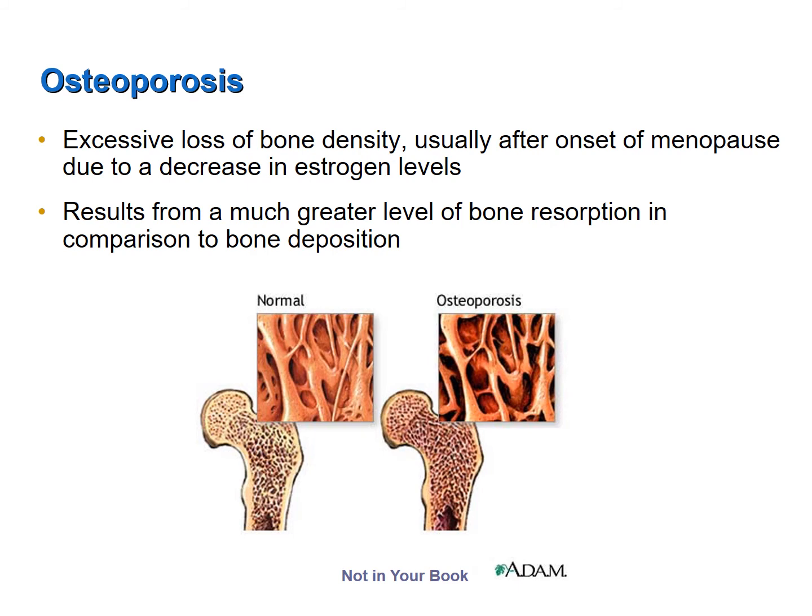The demographic most at risk for osteoporosis in the United States is Caucasian women. To decrease your risk of osteoporosis, it is very important that prior to menopause one gets adequate amounts of calcium and vitamin D, maintains a very active lifestyle — the more exercise and stress you put on your bones, the more bone deposition occurs — and if one smokes, it would be advantageous to stop, as smoking increases bone resorption.